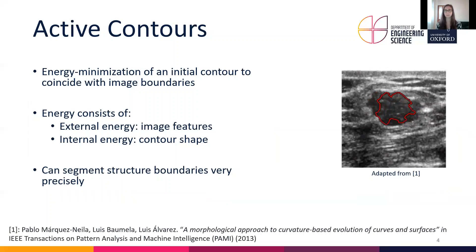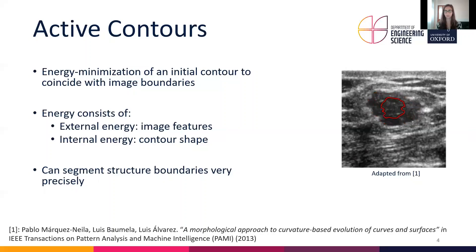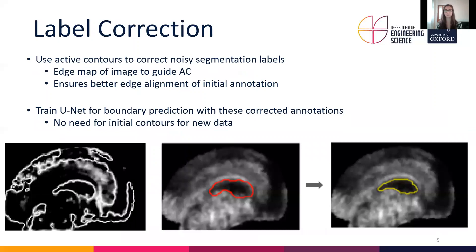Active contours is an energy minimization algorithm that allows an initial contour to grow to coincide with image boundaries. The energy consists of an external energy, which is determined by image features, and an internal energy, which determines the shape of the contour such as smoothness and curvature. Active contours are able to segment structure boundaries very precisely, but the method is very dependent on the initial contour.